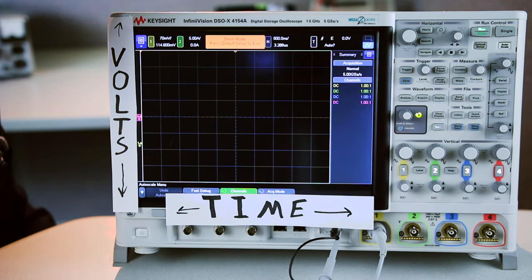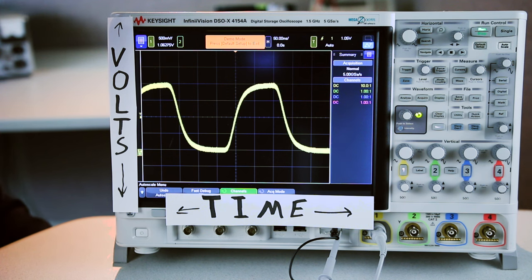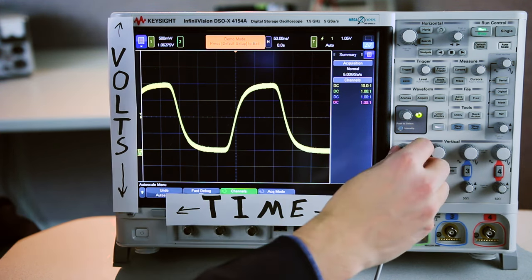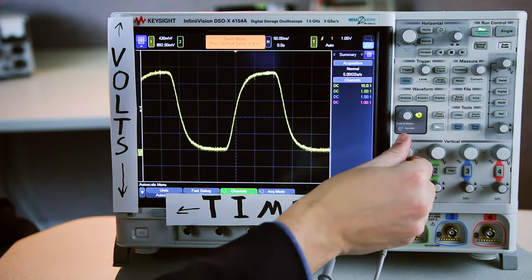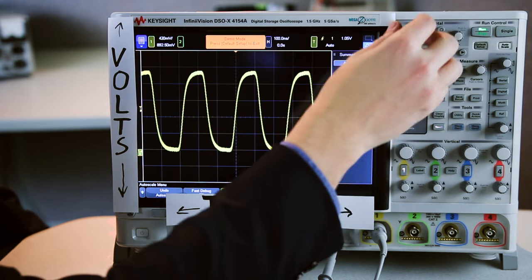When you hit that button, the scope is going to automatically set up the signal how it thinks you want to see it, and then you can go in and use these knobs to adjust the signal to be precisely the way you want it to be.